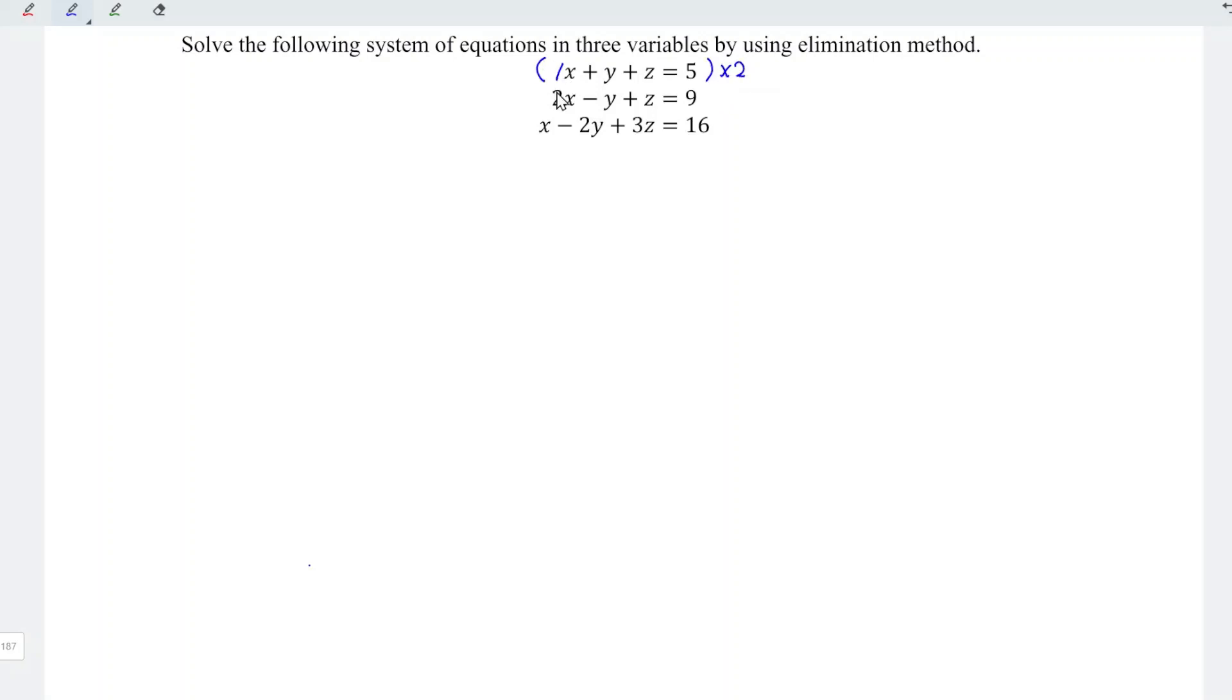So that we have 2x minus 2x and variable x will then be eliminated. However, it's not compulsory for us to do so. Instead of multiplying an equation by using a constant, we can actually combine two equations. For example, I'm going to name this equation 1 and this be equation 3.